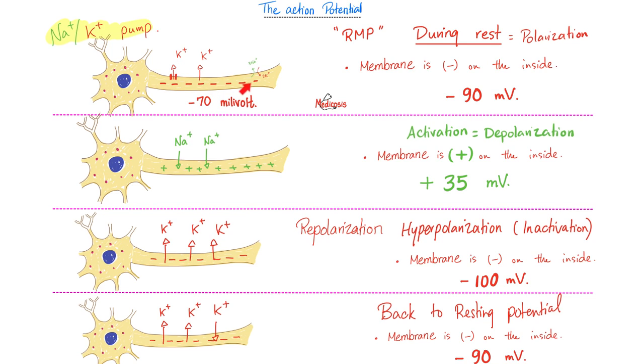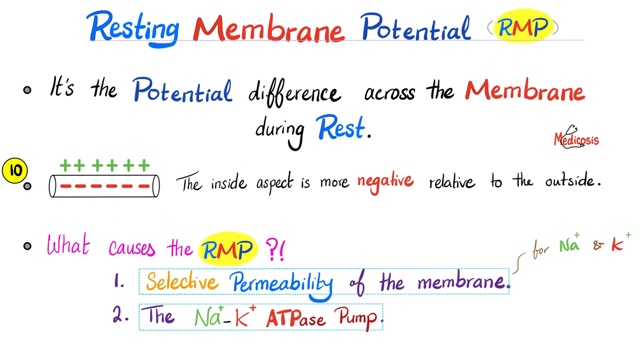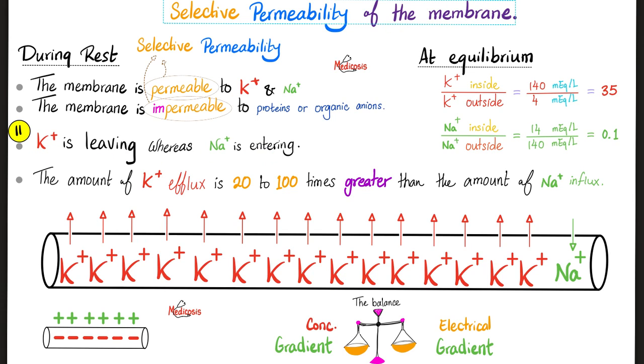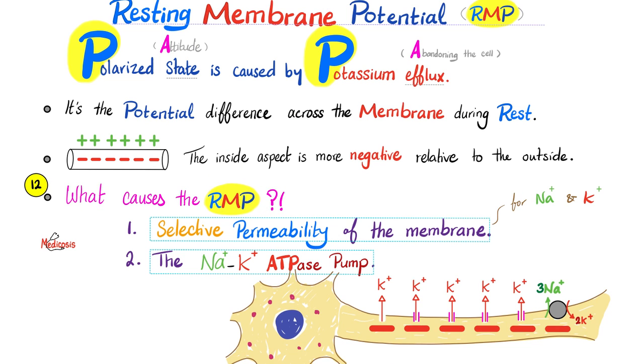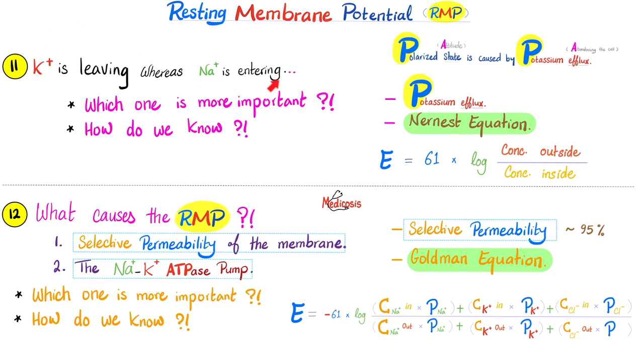During rest, potassium is leaving, leaving the inside more negative. Upon activation, sodium is entering, the inside is positive. And then you stop the sodium channels, you open the potassium again, called repolarization. When you overshoot its hyperpolarization, inward rectifying potassium channels will push some potassium in, returning you back to -90. During rest, the inside is negative, therefore the outside is positive, relatively speaking. Selective permeability is the potassium leaving. Also, sodium is entering during rest, but potassium leaving dwarfs the sodium entrance. What causes the resting membrane potential? The selective permeability and the sodium potassium pump. Potassium leaving versus sodium entering. Which one is more important? The potassium efflux. How did you know? Nernst equation told me. What are the causes of the resting membrane potential? Selective permeability and the sodium potassium ATPase pump. Which one is more important? Selective permeability. How did you know? Goldman informed me.